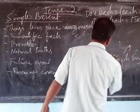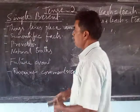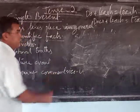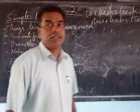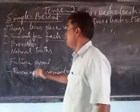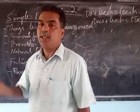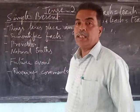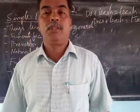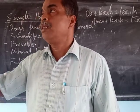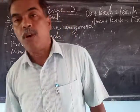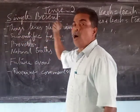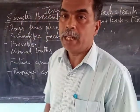Now we go into the usages. First, Simple Present Tense is used for scientific facts — for example, 'The sun rises in the morning,' 'The sun sets in the evening,' 'Something thrown up falls down,' or 'Rain comes down.' These are natural truths.